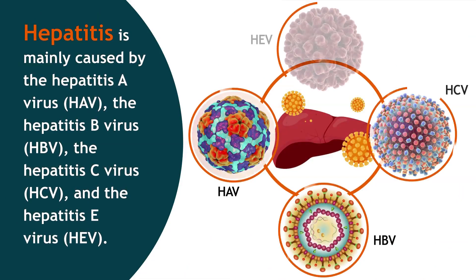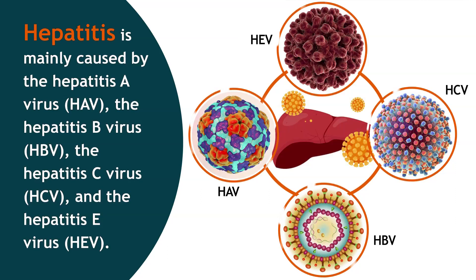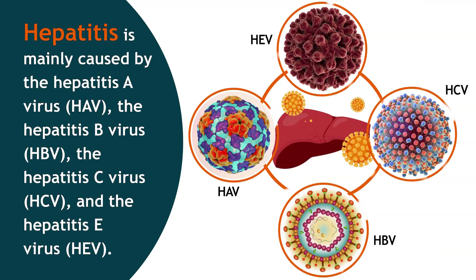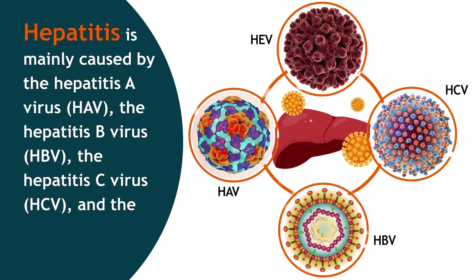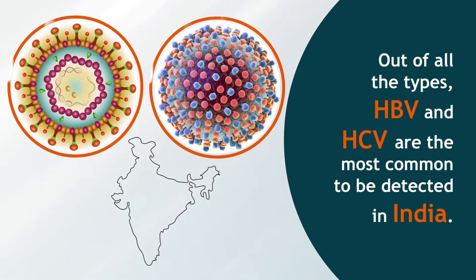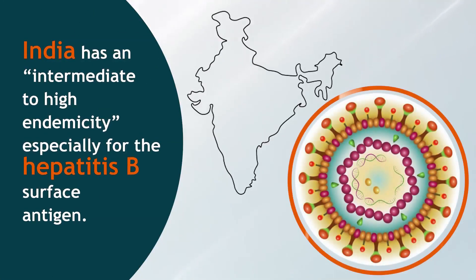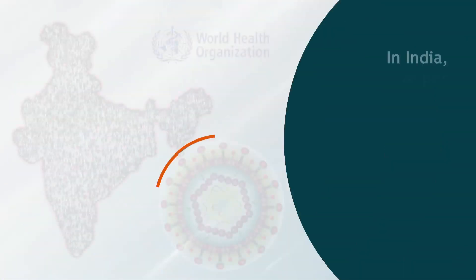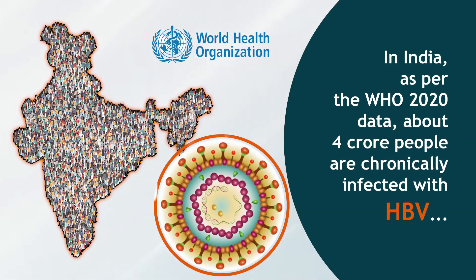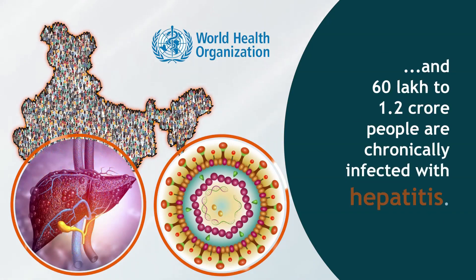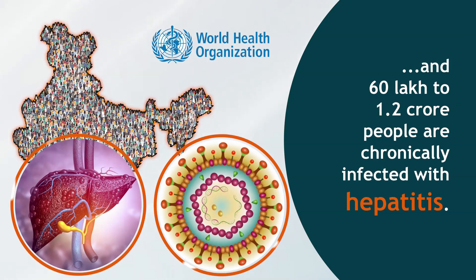Hepatitis is mainly caused by the hepatitis A virus (HAV), the hepatitis B virus (HBV), the hepatitis C virus (HCV), and the hepatitis E virus (HEV). Out of all the types, HBV and HCV are the most commonly detected in India. India has an intermediate to high endemicity, especially for the hepatitis B surface antigen. As per WHO 2020 data, about 4 crore people are chronically infected with HBV, and 60 lakh to 1.2 crore people are chronically infected with HCV.